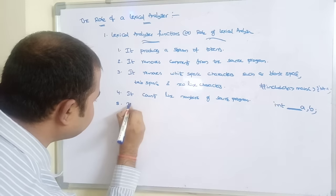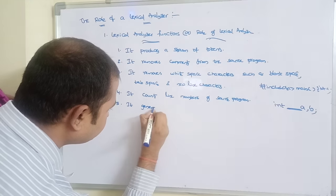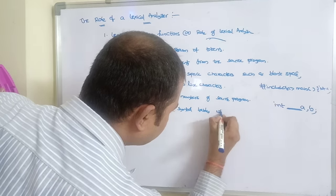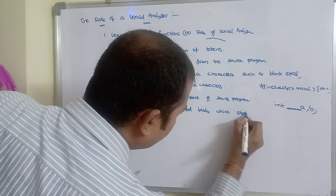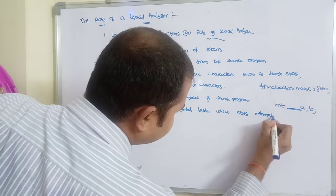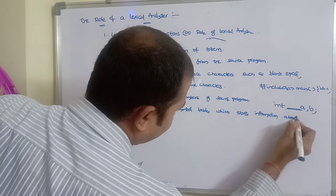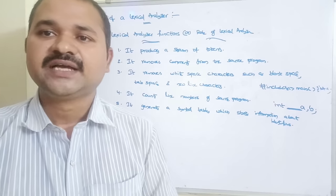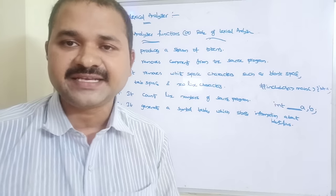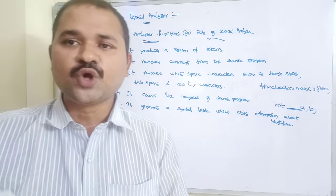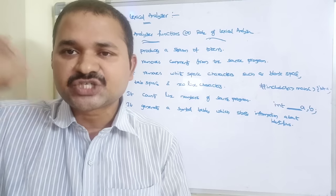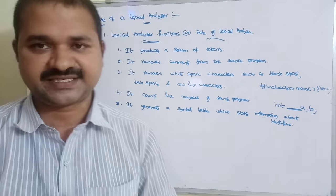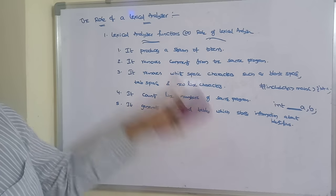The next task of the lexical analyzer is that it generates a symbol table, which stores information about identifiers. Whenever a token is generated, the lexical analyzer stores the token information in the symbol table. So symbol table generation is done by the lexical analyzer.